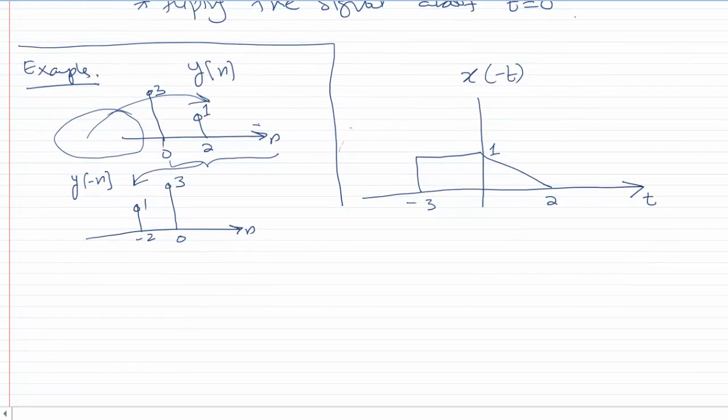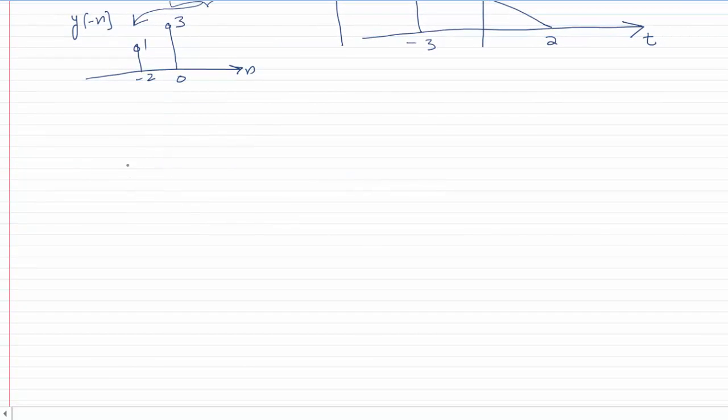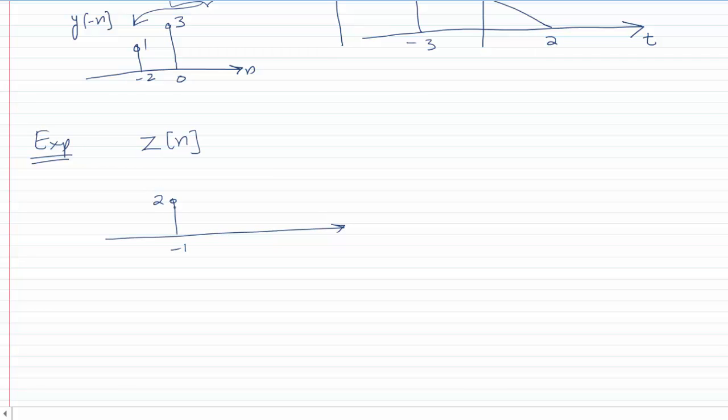I think I can do one more example to make it more clear. This time, let's assume Z(n) to be something like this: for n=-1 we have 2, for n=0 we have 1, for n=1 we have 3, and for n=4 we have -3. That's the signal we have, and we are asked to find the time reversal of it, which is Z(-n).